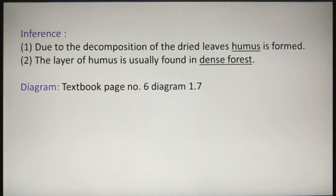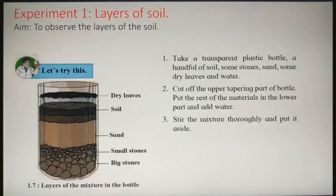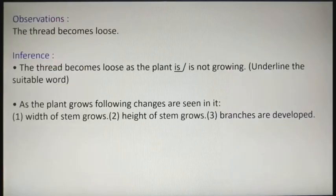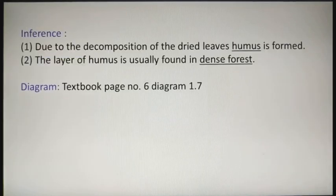Finally, you have to draw a well-labeled diagram showing the layers of soil in sequence as you have seen in the bottle. The diagram is on textbook page number 6, diagram 1.7. Write that reference with pencil in your activity book and draw the diagram afterwards.